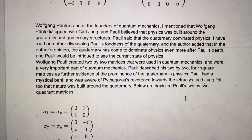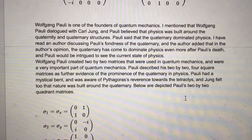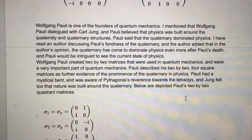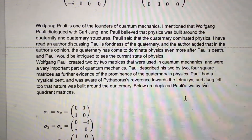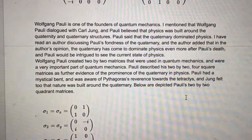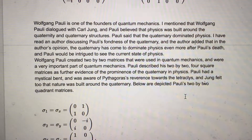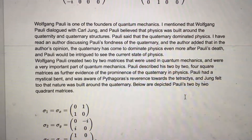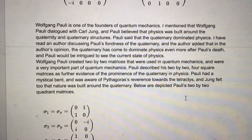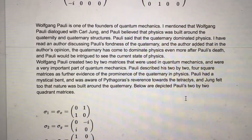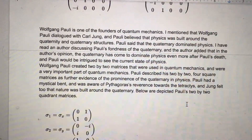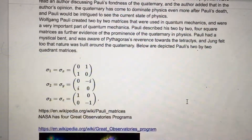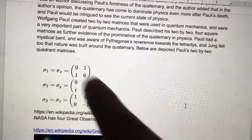An author discussing Pauli's fondness of the quaternary added that, in the author's opinion, the quaternary has come to dominate physics even more after Pauli's death, and Pauli would be intrigued to see the current state of physics. Pauli had a mystical bent and was aware of Pythagoras' reverence towards the Tetractys. Jung also felt that nature was built around the quaternary. Below are depicted Pauli's two-by-two matrices — see how they're quadrants.